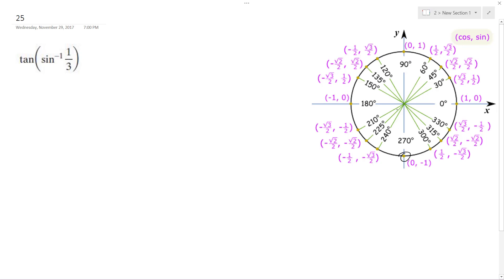Sine is bound between negative pi over two and pi over two, so it's going to be in quadrant four.